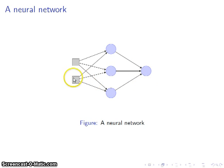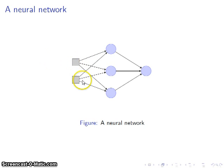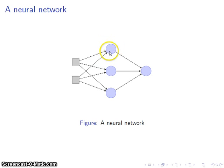The input layer boxes are gray and square because they are not passed through the transfer function — they are simply a buffer to hold whatever our raw input values are. So if we were going to compute the output of the network, we would plug in our values here, multiply them by whatever weights connect them to the nodes in the next layer, add those all up plus the bias term, and pass it through the transfer function.